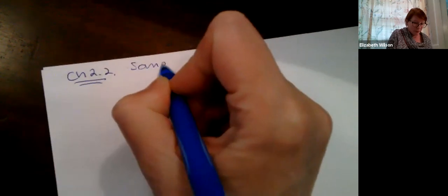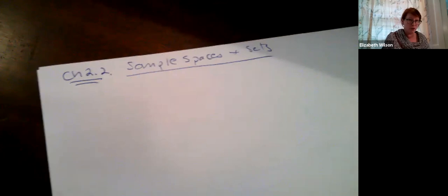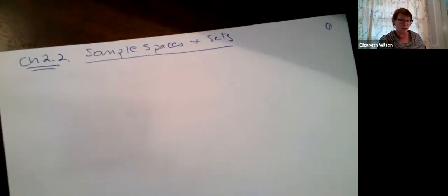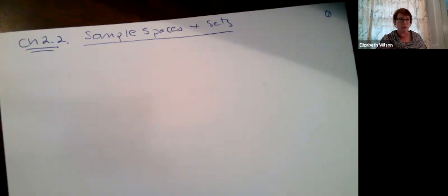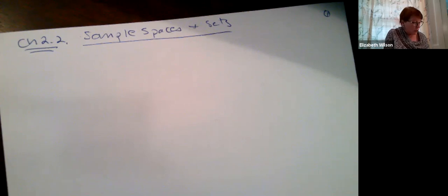So with that, I'm going to start right in on Chapter 2.2. Chapter 2.2 has a lot of definitions in it — it's called Sample Spaces and Sets. We need this vocabulary so that when we talk about things like events or sample spaces, you know exactly what we mean. So let's go through some definitions.